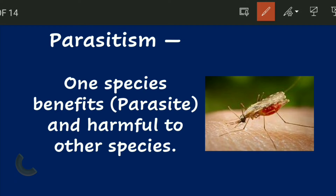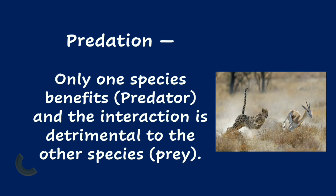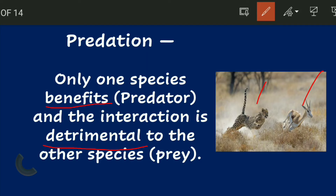Next is parasitism. In parasitism, one species benefits but the other species is harmed — like the mosquito and human relationship: mosquitoes get blood but the human body is hurt. Next is predation. In predation, one species benefits and the other is killed, like a lion attacking a deer. The difference between predation and parasitism is: in parasitism the host is harmed but not killed, while in predation the prey is killed.